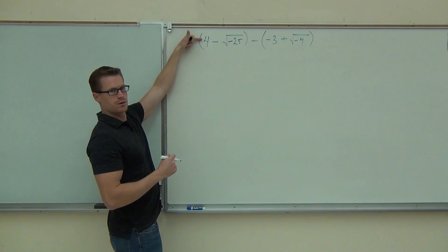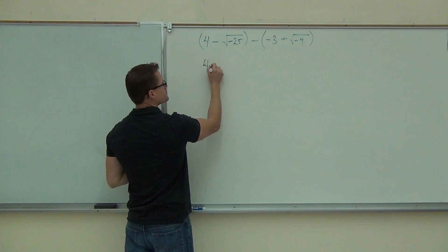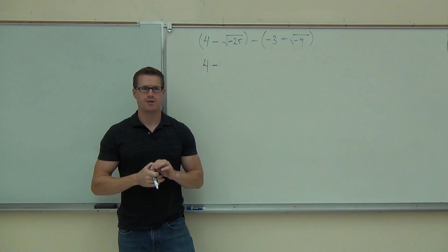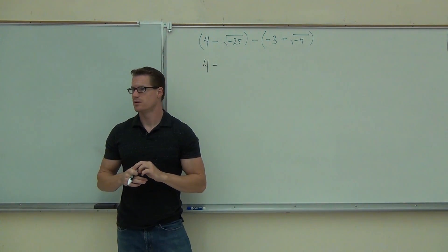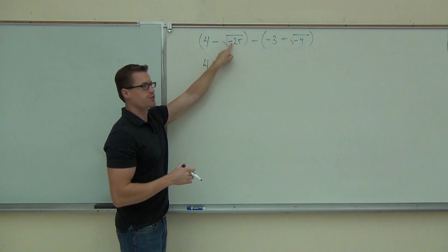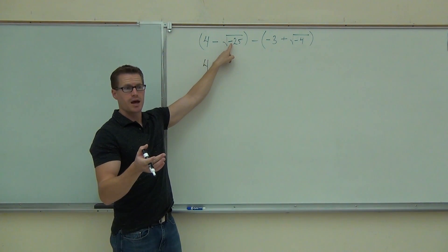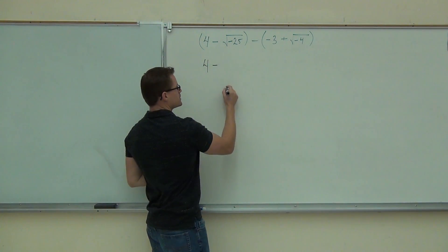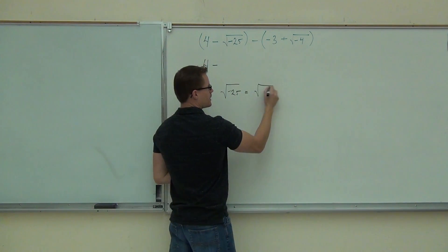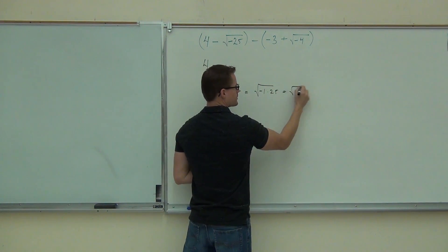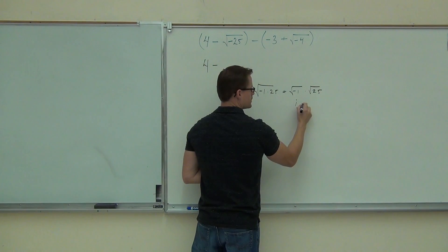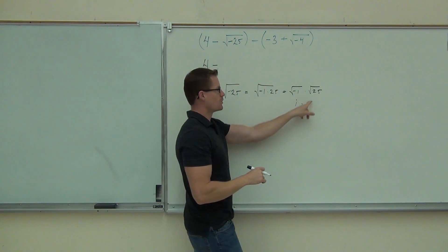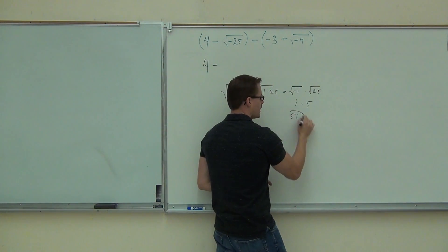I-form means you're getting rid of a square root of a negative number somehow. Do we need to do anything with the 4? No. So I know this is just going to be 4, and this minus is still going to be a minus. What is the square root of negative 25 — is it real or imaginary? Imaginary, because it has that negative inside the root. That negative creates an i. With the square root of negative 25, we'd break that off into negative 1 times 25, split up the root, and get i times 5.